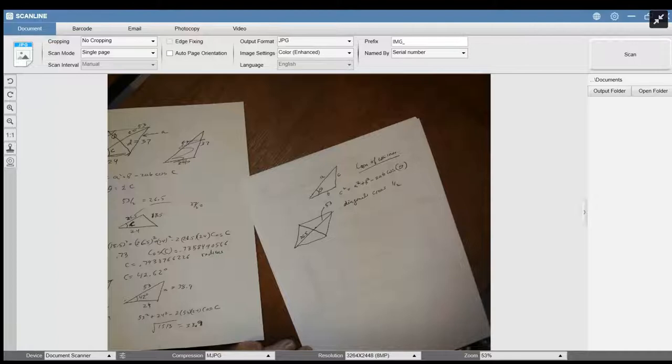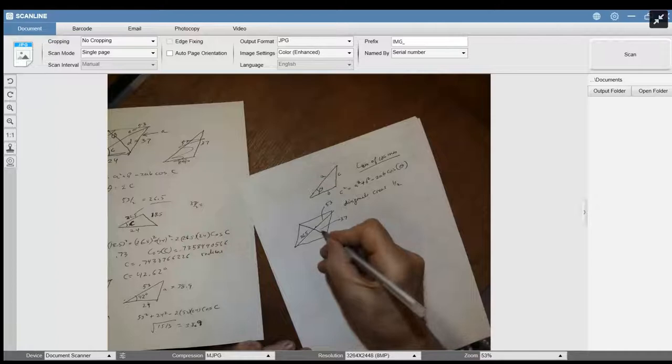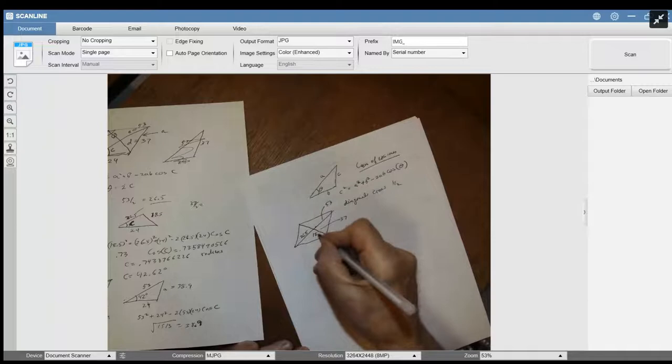37. So this was 37. So this one here is actually half of 37, which is 18.5.